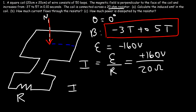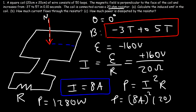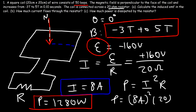Finally, to calculate the power dissipated by the resistor, we use P equals I squared times R: 8 squared times 20 ohms equals 64 times 20, which equals 1280 watts. A lot of power can be generated by a change in magnetic flux. And the more loops you have, the greater the induced EMF — with a single loop the induced voltage would only be 160 divided by 50, or 3.2 volts. Increasing the number of loops greatly increases the induced EMF.